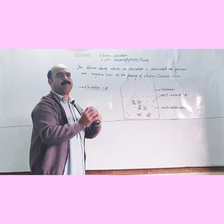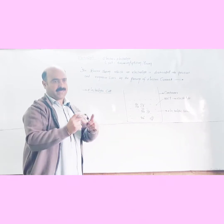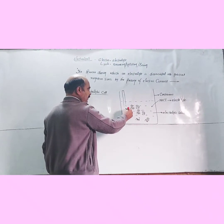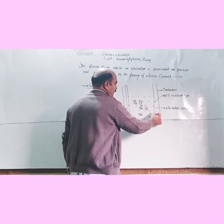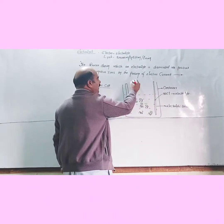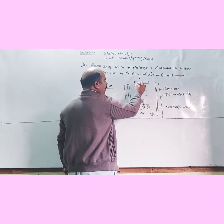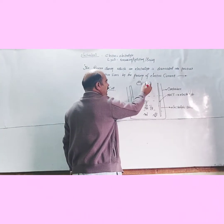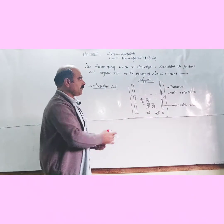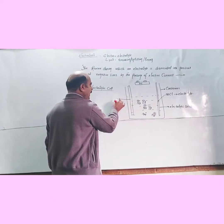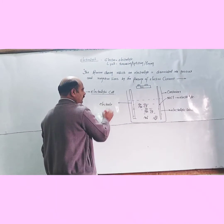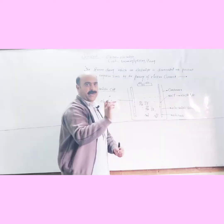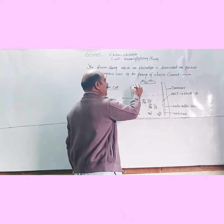Two metallic plates, rods, or wires that are good conductors are inserted into the solution. These are connected to a DC current source — a battery. One electrode is connected to the positive terminal and the other to the negative terminal of the battery.